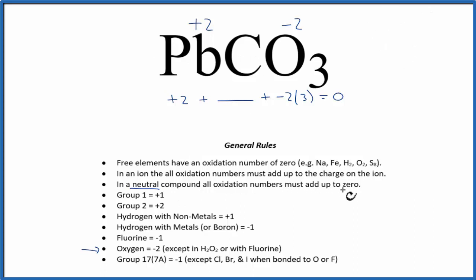So we have 2 plus some number minus 6 equals 0. 2 plus 4 would give us 6 minus 6, which is 0. So the oxidation number on the carbon is +4.